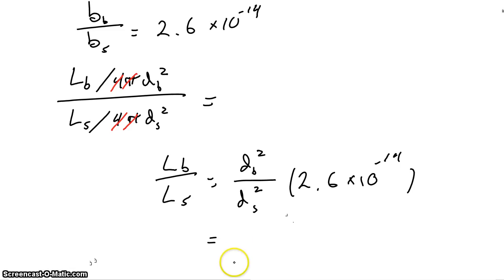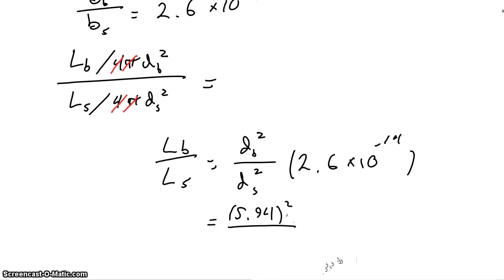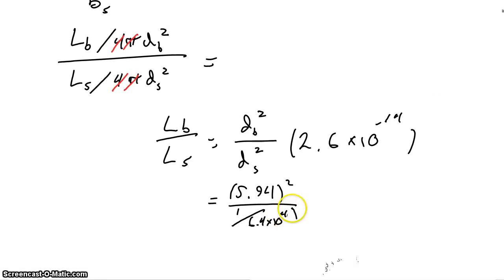The distance to Barnard's star we were told was 5.94 light years. And now we need the distance from the Earth to the sun. The distance from the Earth to the sun is 1 AU. That's the definition of an AU. And they tell us here that to convert AU to light years we use the relationship 1 light year is 6.3 times 10 to the 4th AU. So flipping that around, 1 AU is 1 on 6.4 times 10 to the 4th. Take that and square it. And we'll keep our 2.6 times 10 to the negative 14 up here. Time for the calculator to tell us that the result is 3.6 times 10 to the negative 3rd.